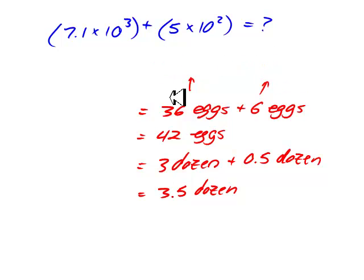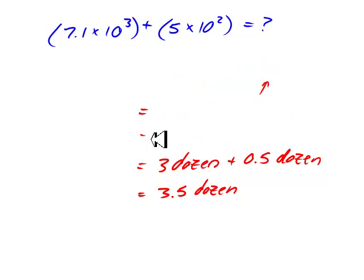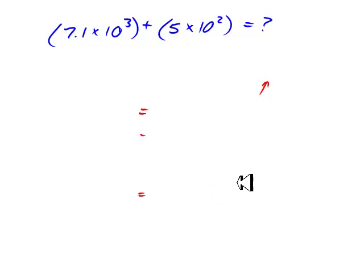So, let's at this point talk about the problem at the top of the page. We have 7.1 thousand, and we have five hundred. So what we need to do is make one of those be the same size grouping as the other.